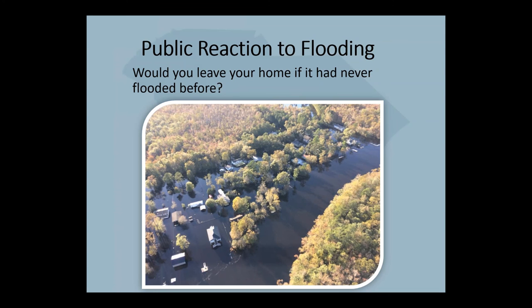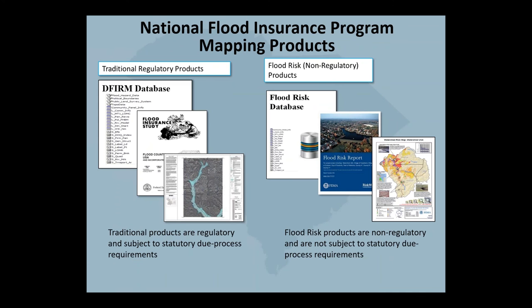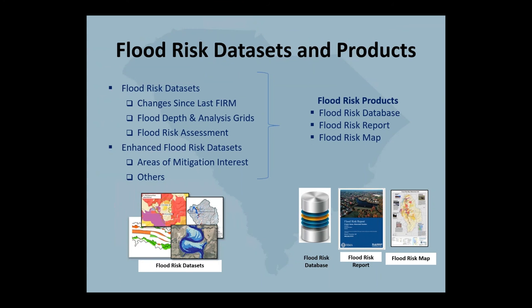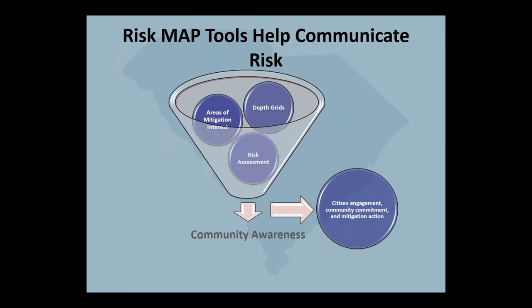These are the products we produce as part of a FEMA map update. You will notice the traditional regulatory products, and the new flood risk products are both on the screen. The flood risk data sets and products are the newest information we are producing, provided in a GIS format making them more user-friendly. These products help a local official articulate flood risks to their citizens.